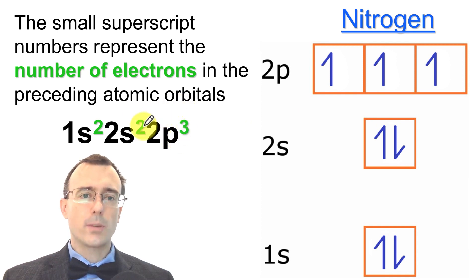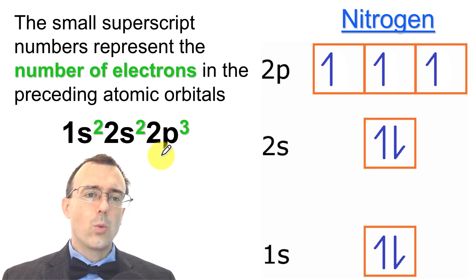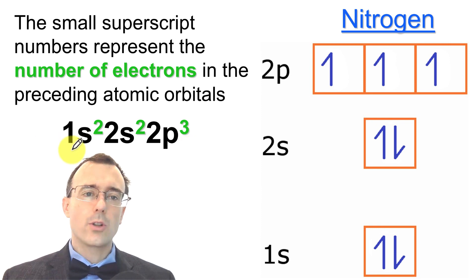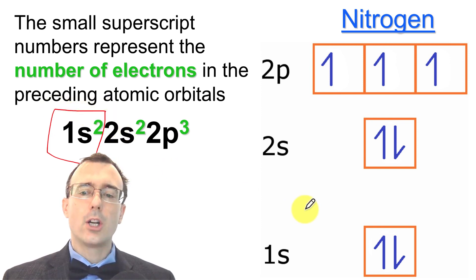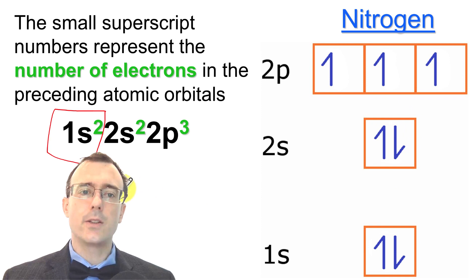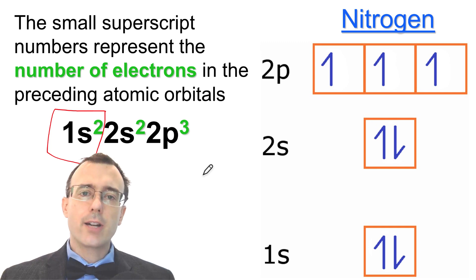Next, what about these superscript numbers? They're smaller numbers positioned up high. It looks like 1s squared, 2s squared, 2p cubed, but we do not say 'squared.' The way we read this is 1s2, 2s2, 2p3. These superscript numbers are the number of electrons in the preceding atomic orbital. So 1s2 means you have two electrons in the 1s subshell. The 2s2 means two electrons in the 2s subshell. The 2p3 means three electrons in the 2p subshell. We can do this for any energy level diagram and for any element.